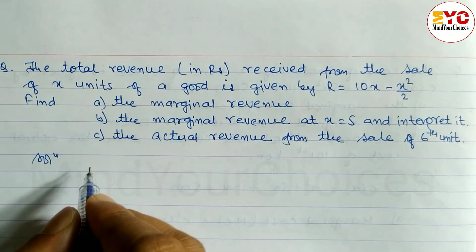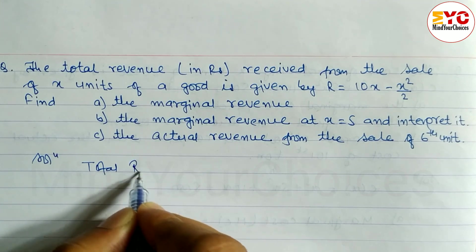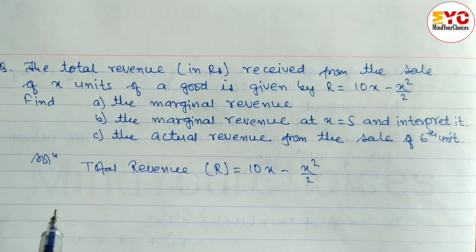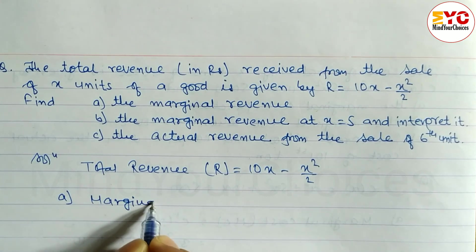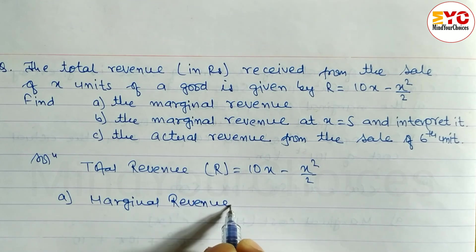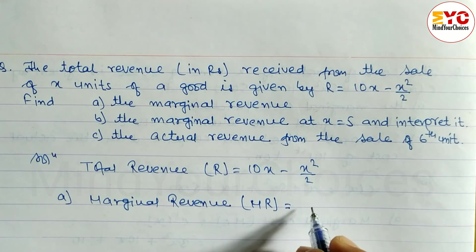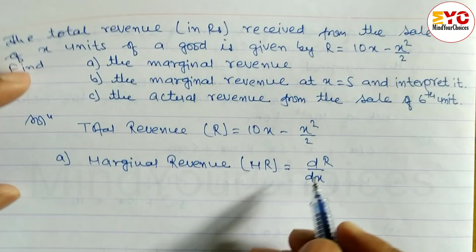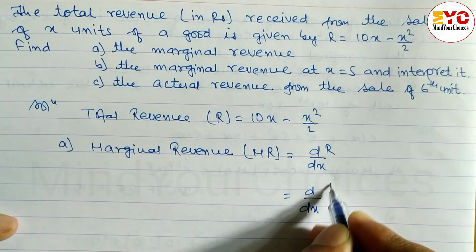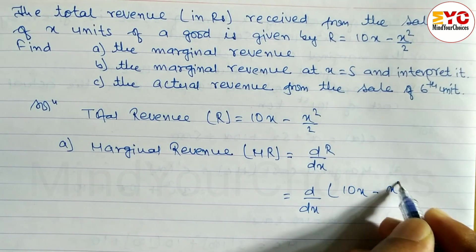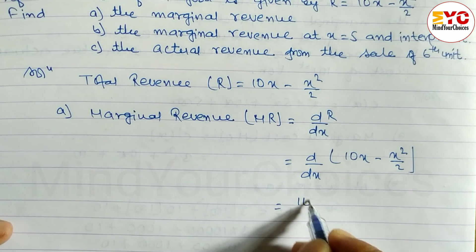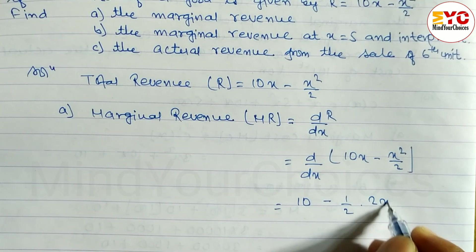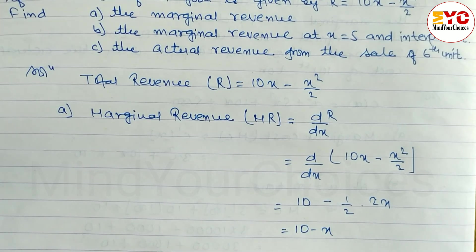Total revenue R is equal to 10x minus x squared by 2. To find marginal revenue, we take the derivative. Marginal revenue MR equals d/dx of (10x minus x squared by 2). The derivative of 10x is 10, and for x squared by 2 we get 1/2 times 2x, so x. Therefore MR equals 10 minus x.